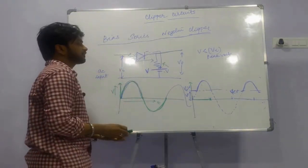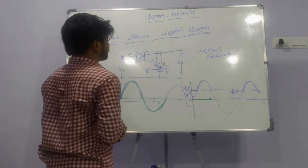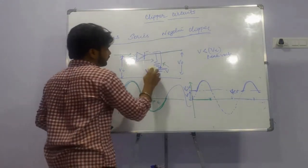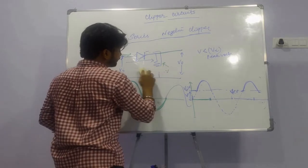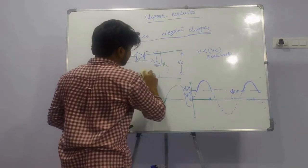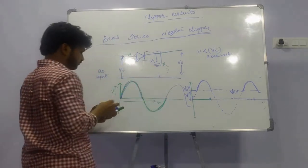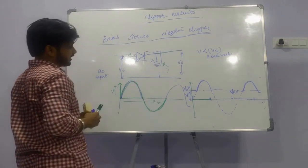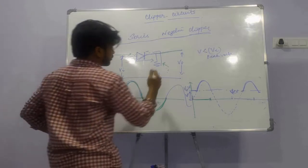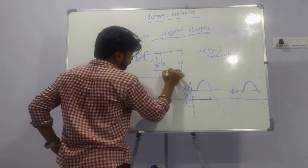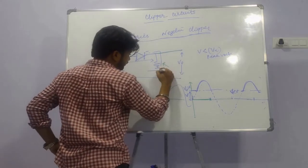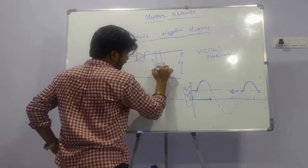In the bias series negative clipper, if we invert the DC voltage, let's analyze how the circuit operates and see how the output waveform is formed.